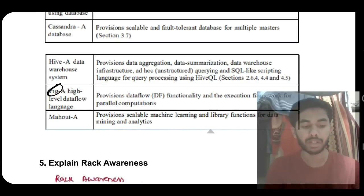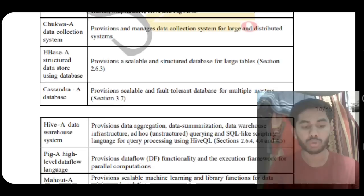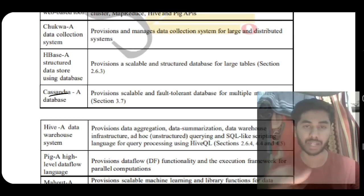The fourth important question is Hadoop ecosystem tools. A simple way to memorize these: Start with Pig, which is a high-level data flow language. Data flow language means data is transformed to different forms and execution happens. It's a framework for executing data in different forms. Hive is a data warehouse system used for data aggregation, summarization, and SQL scripting. Cassandra is scalable and fault-tolerant database for multiple masters. HBase is used for scalable storage of structured data.